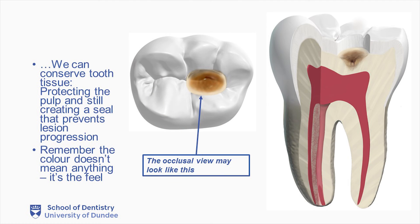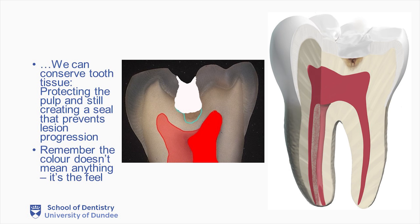Here we can also see what the occlusal view may look like. Here you can see a representation of what the restoration would look like. We can see the restoration sealing the lesion, bonded to sound enamel and effectively preventing the caries tissue overlying the pulp from gaining any access to nutrients from the oral environment.